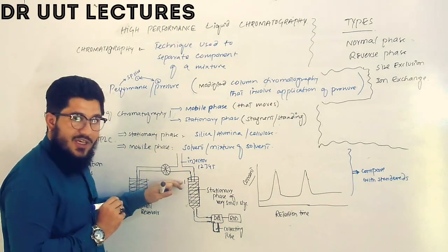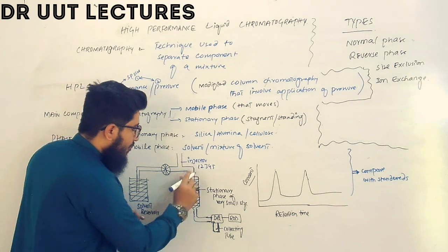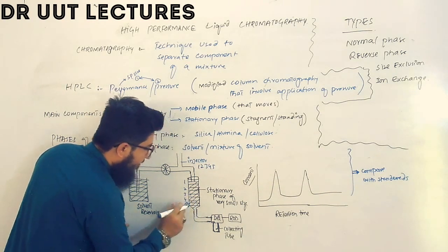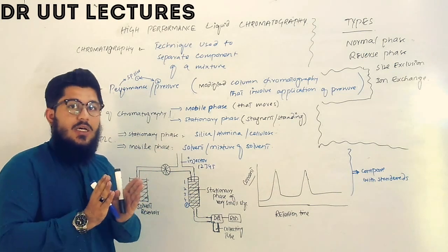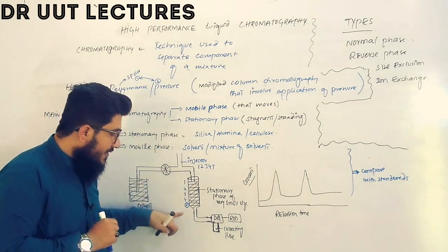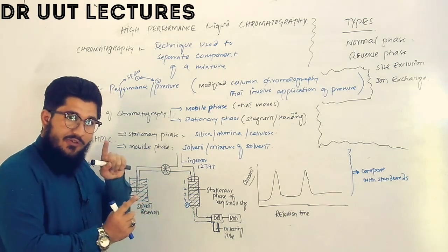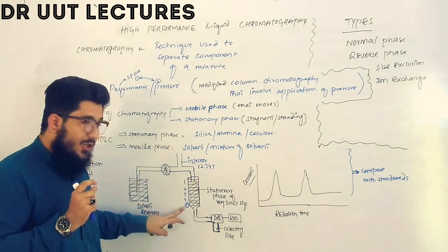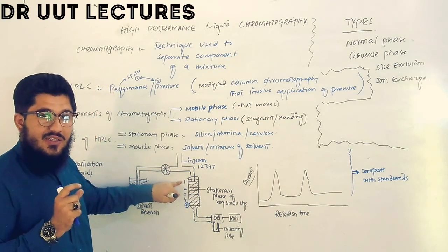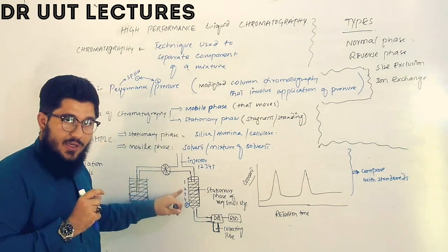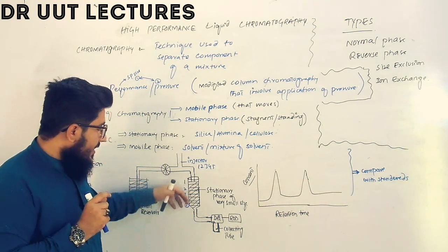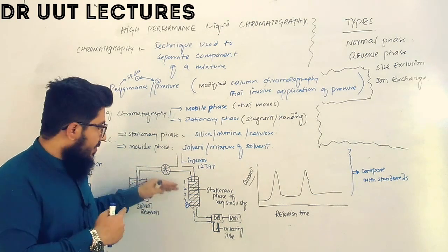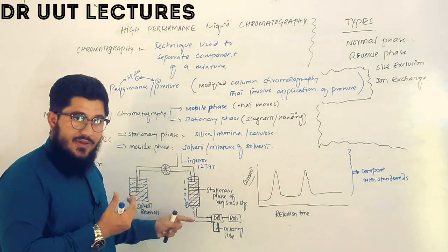Consider component number one — it has high interaction with the stationary phase, so it will move very slow. Component number two has a little less interaction with the stationary phase, and likewise for three and four. Component number five has more interaction with the mobile phase compared to the stationary phase, so it will move first. Mobile phase moves first, then component five elutes out first, while component one, having very less interaction with the mobile phase, moves very slow. This is how components are separated.